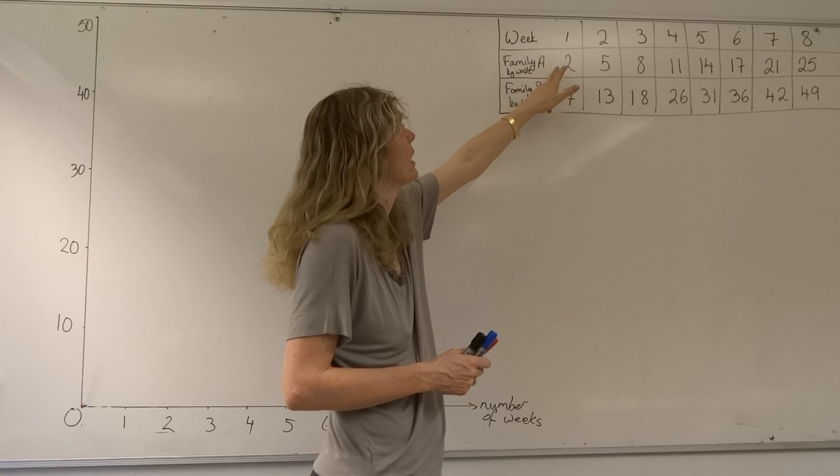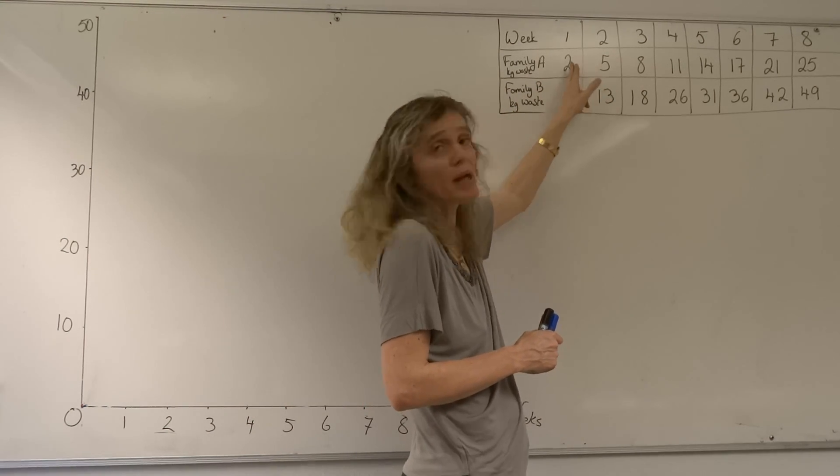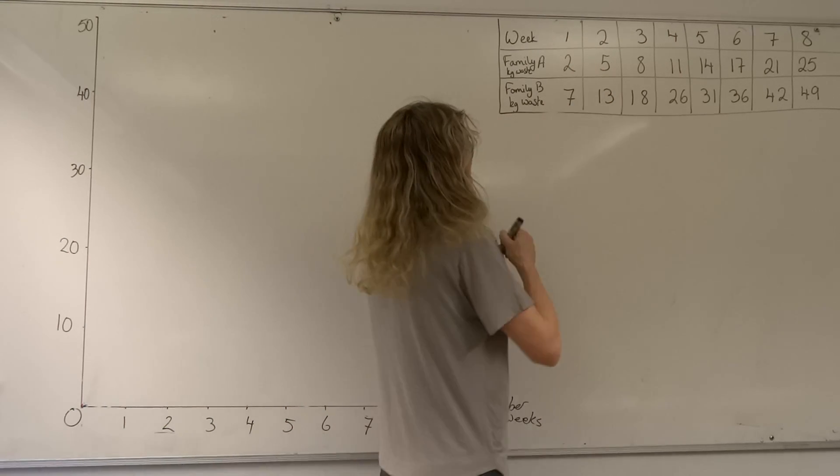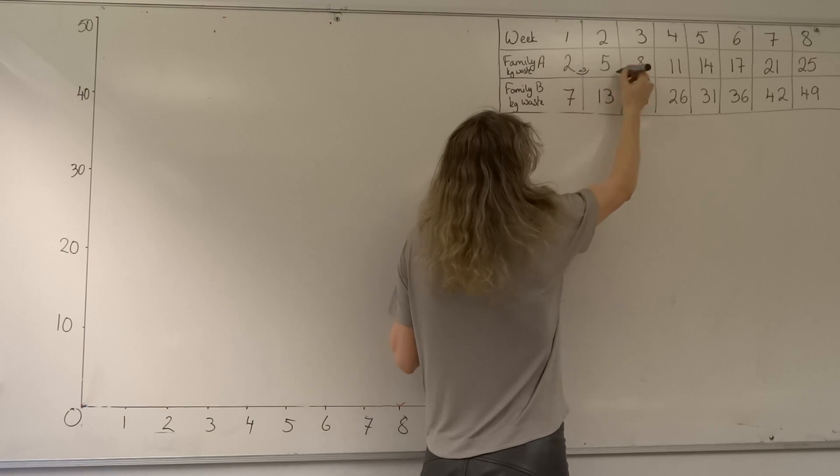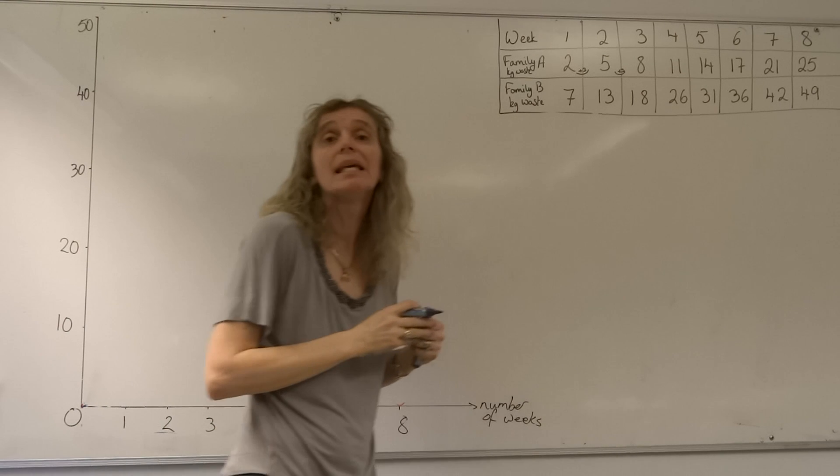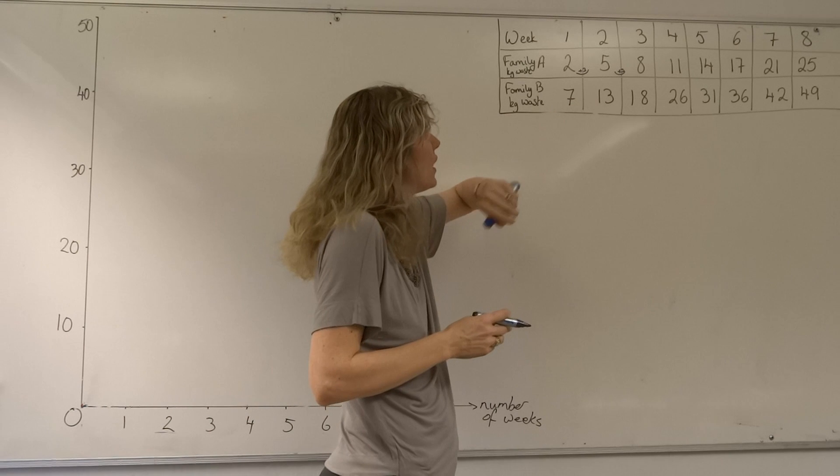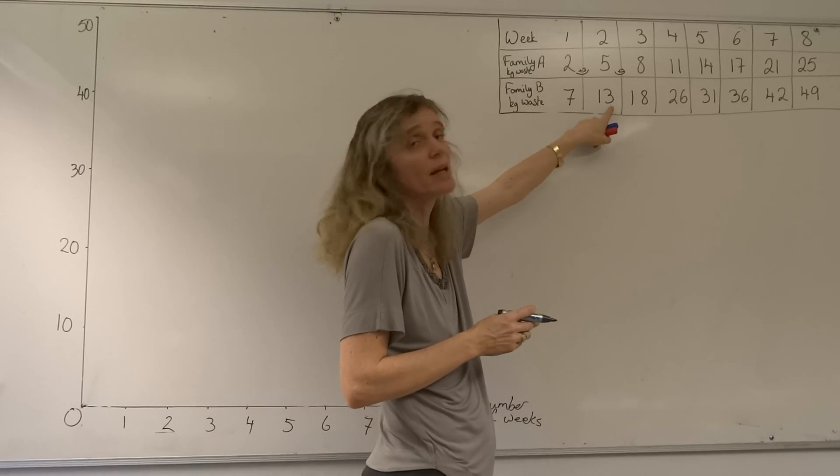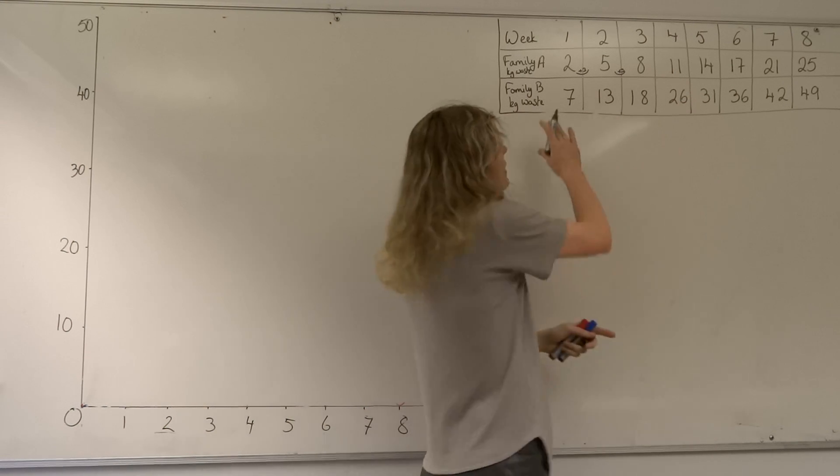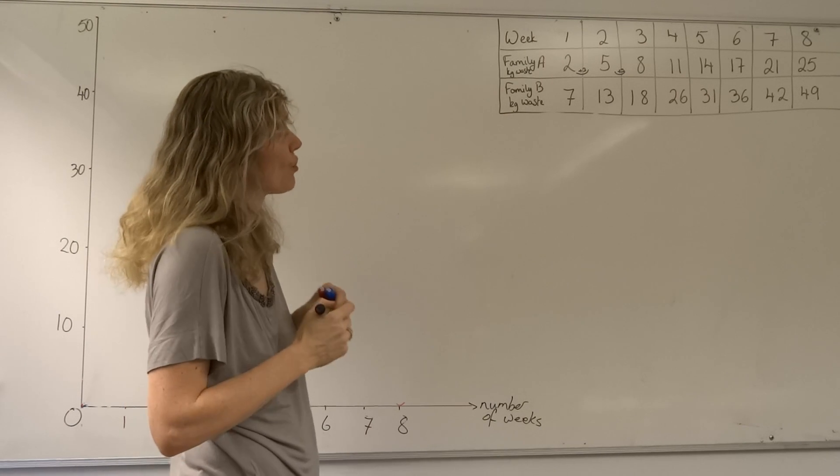Family A collected two kilos in the first week. By the second week they collected two plus three, giving them a total of five kilos. We can see here we have plus three plus three. In week three they've collected eight kilos total since the start. Family B had collected seven kilos in the first week, then in the second week they had collected 13 kilos, then 18. These weights are all being added to the previous week, and we have to plot a graph.